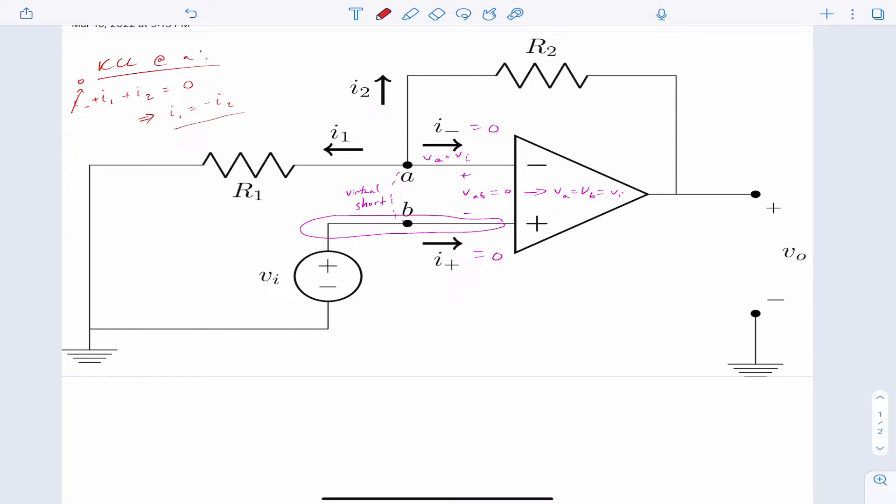Now that we have that established, there are some things we can know here. I1, using Ohm's law, you always take the tail node voltage minus the head node voltage. So it's VA minus zero over R1. And we know that VA is VI. So we'll put VI over R1. And then I2 then has to be negative VI over R1.